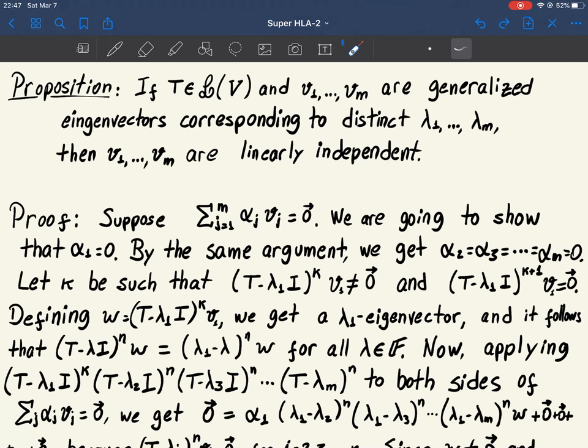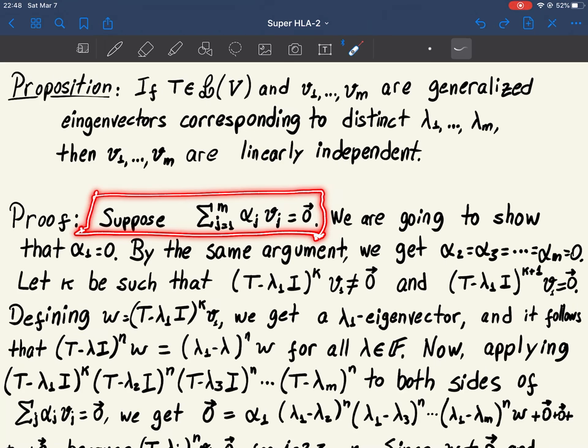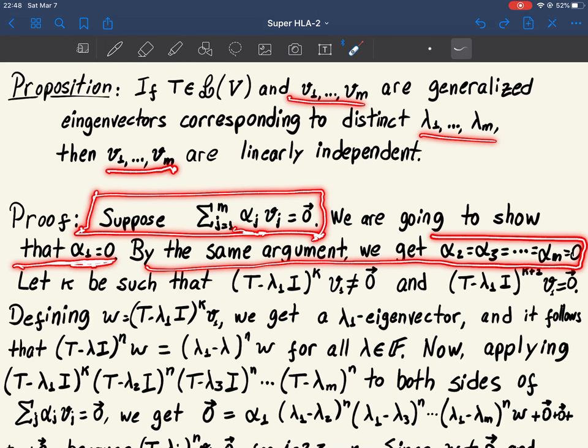It goes as follows. As usual, that's the most typical way to prove that a collection of vectors is linearly independent: we take some linear combination and we have to show that all the coefficients are zero. In fact, we're going to show only that alpha 1 is zero. But since the order here is completely irrelevant, if we show that alpha 1 is zero, the same argument will work for alpha 2, alpha 3, etc.